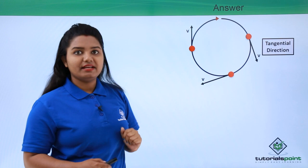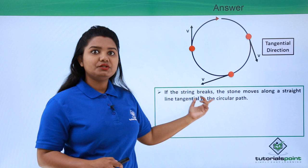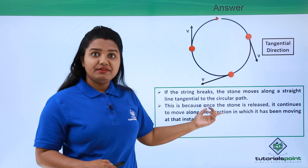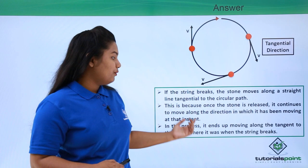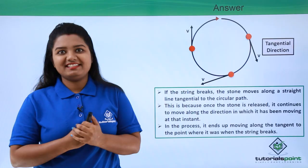To conclude, if the string breaks, the stone moves along a straight line tangential to the circular path. This is because once the string breaks, the stone continues to move along the direction in which it was moving at that particular instant, ending up moving along the tangent to the circle at the point where it was located. Thanks for watching tutorialspoint.com — simply easy learning.